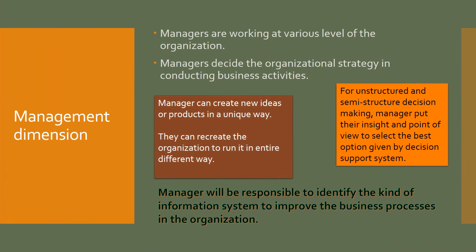Moving toward the management dimension of information systems: managers are the core element in performing business processes, so their involvement is important in defining organizational strategy. Unstructured and semi-structured decisions are mostly affected by manager insight and point of view. For this purpose, information systems provide a number of options so that managers can evaluate and select the best one according to their perspective. In this way, managers create new and unique ideas or products. Sometimes managers can restructure the entire organization. The selection and scope of an information system is entirely based on information requirements identified by managers — even a system with many capabilities is not a workable solution if managers are not willing to accept it.